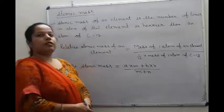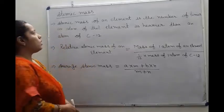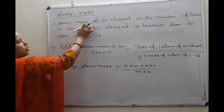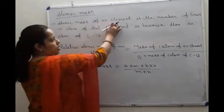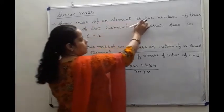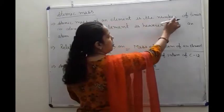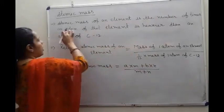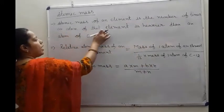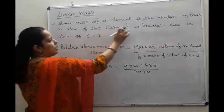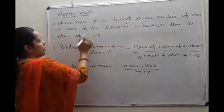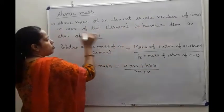Our next topic is atomic mass. The atomic mass of an element is the number of times an atom of that element is heavier than the atom of carbon-12.